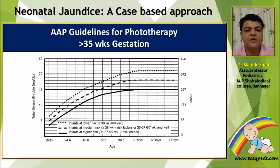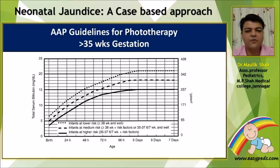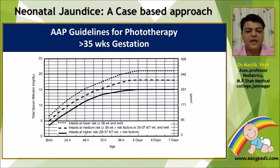The AAP guidelines for phototherapy in more than 35 weeks gestation use a normogram with three different dashed lines for different categories. The bold lowermost line is for infants at higher risk — those 35 to 37 weekers and those with risk factors like RH isoimmunization, ABO, or G6PD deficiency. The second dashed line is for infants at medium risk — more than 38 weekers with risk factors, or 35 to 37 weekers who are well without risk factors. The uppermost line is for infants at lower risk — term babies of more than 38 weeks gestation.